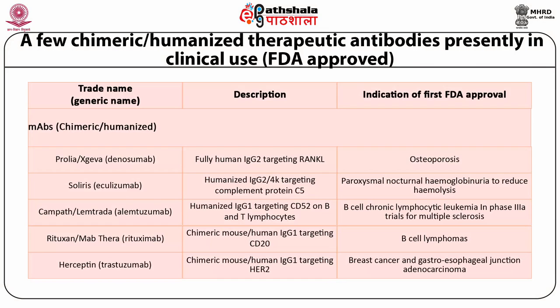Examples of chimeric or humanized therapeutic antibodies in clinical use generated using empirical methods include denosumab, a fully human antibody used for osteoporosis; Soliris, a humanized IgG2 antibody targeting complement protein C5 used to reduce haemolysis; and Campath, Rituxan, and Herceptin, which are chimeric antibodies in clinical use approved by the FDA.